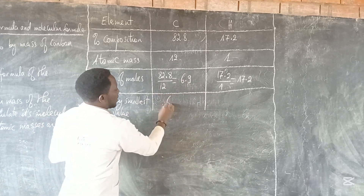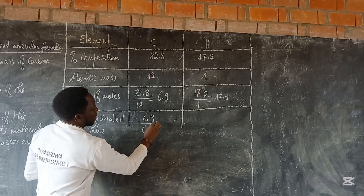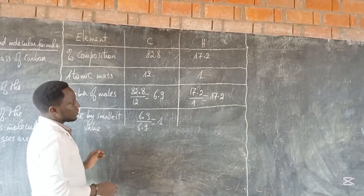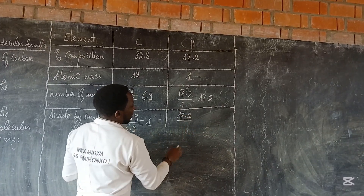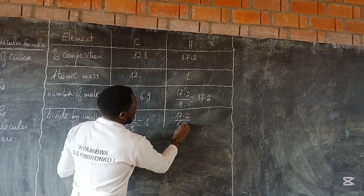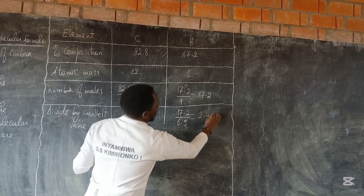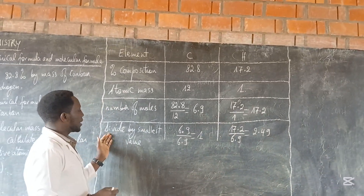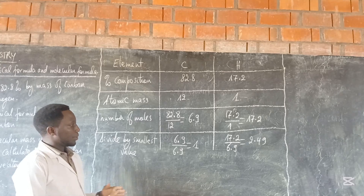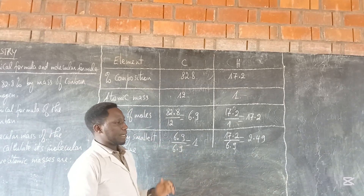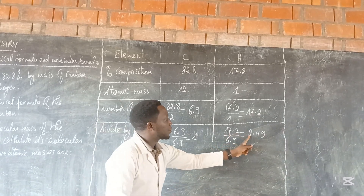Dividing by the smallest value: we take 6.9 divided by 6.9, and the answer is 1. For hydrogen, we take 17.2 over 6.9, and the answer is 2.49. After getting these answers by dividing by the smallest value, we want to round these numbers. If you have decimal numbers, you have to round them.